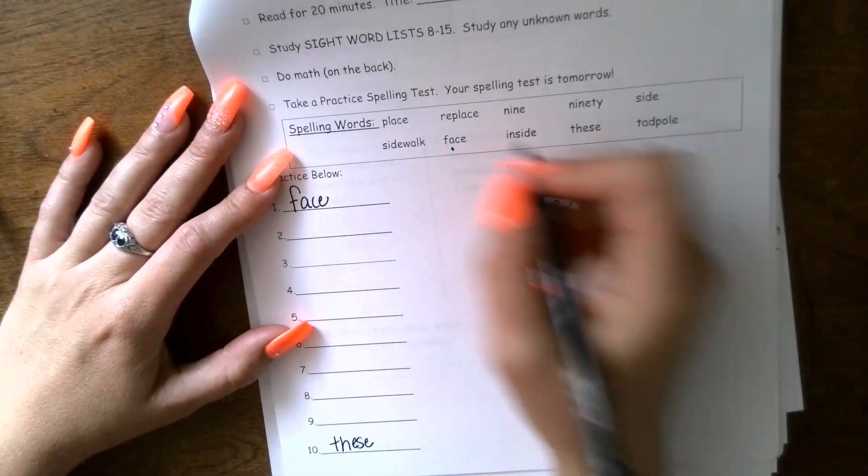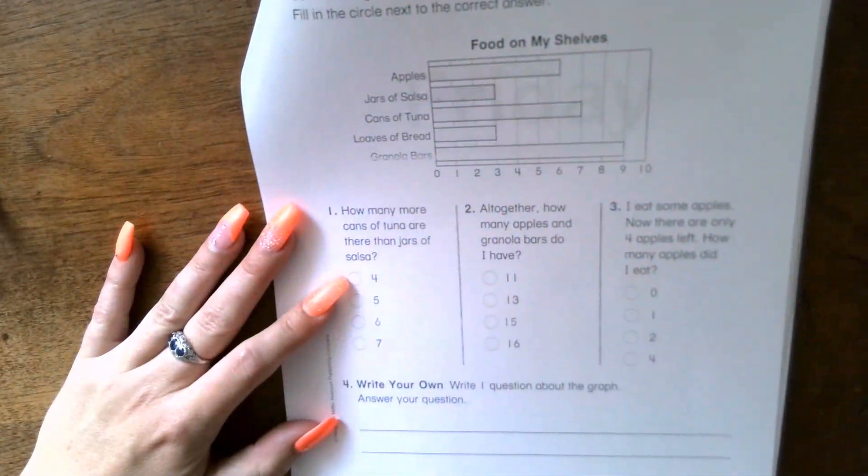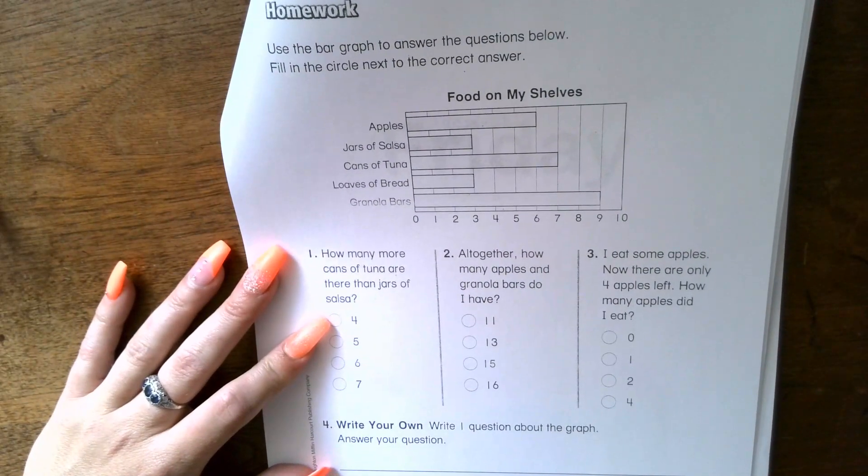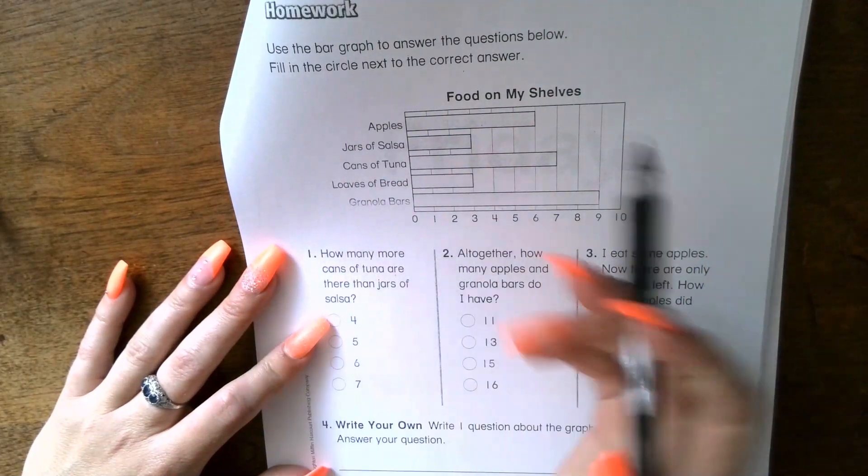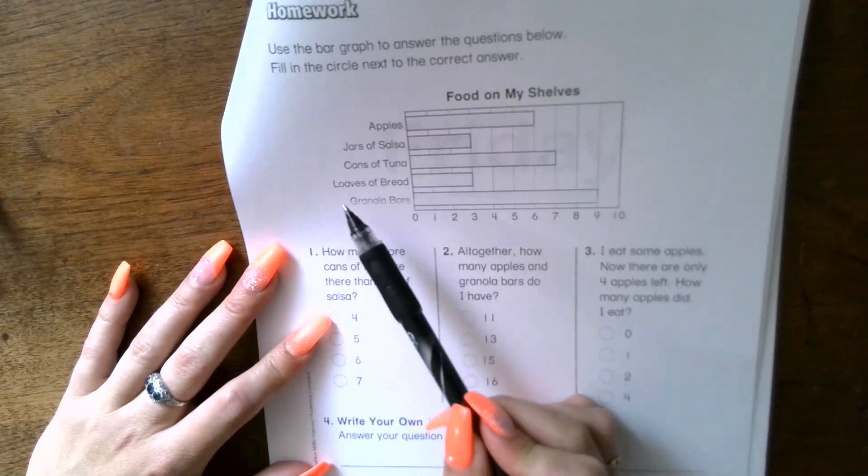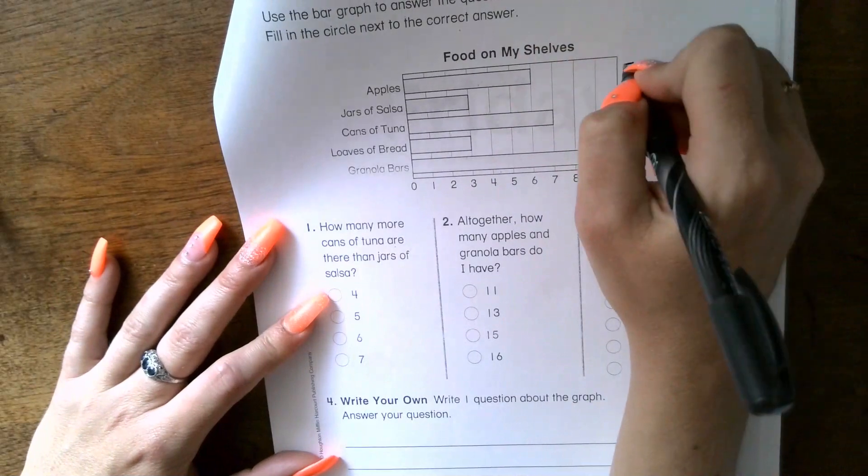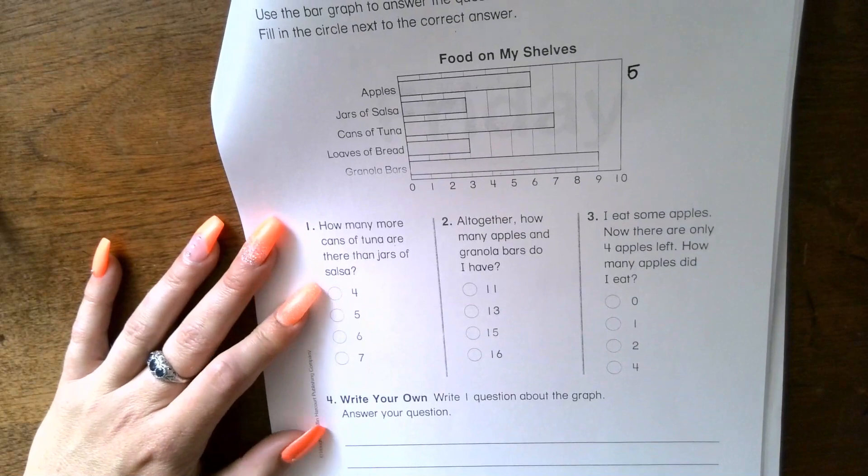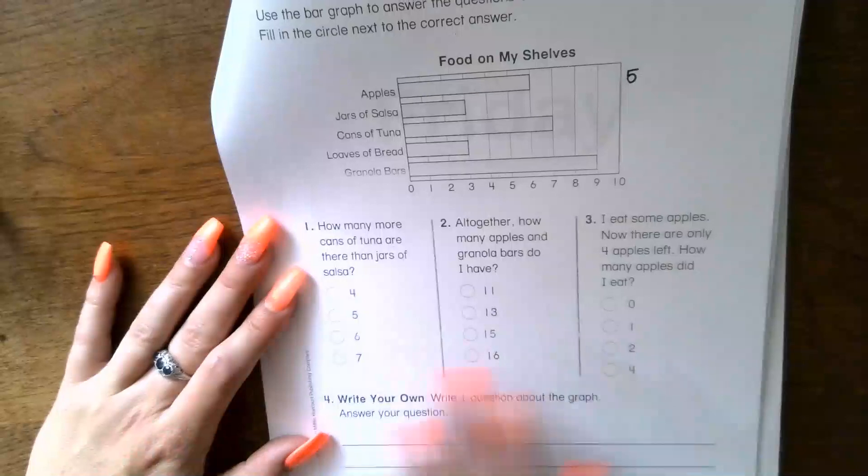Your last page, you're gonna continue working with graphs. At the top it says use the bar graph to answer the questions below and fill in the circle next to the correct answer. Remember to analyze your bar graph first: Food on My Shelves - apples, jars of salsa, cans of tuna, loaves of bread, and granola bars. Go ahead and mark what those numbers are before you even go down. I'm just gonna mark the first one - five apples. You mark the rest, and I'll read the questions to you but you're gonna solve them.